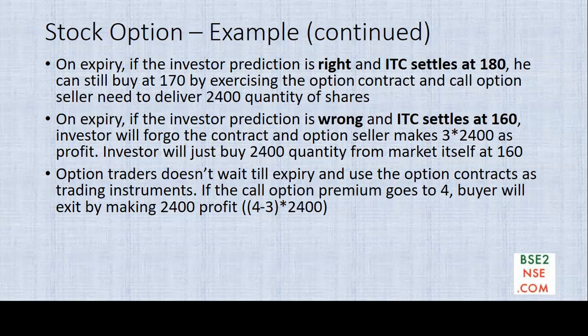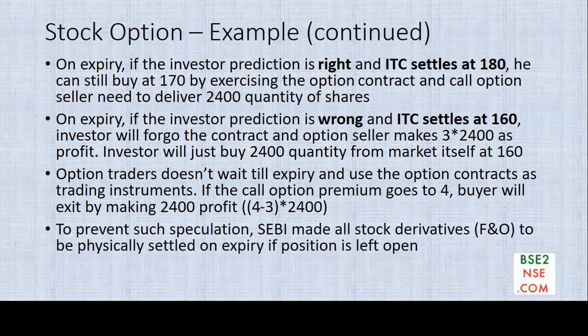Option traders currently don't wait till expiry to exercise the contract. These option contracts are used as trading instruments. For example, if a call option buyer buys the option at 3 rupees and it goes to 4 rupees in 2–3 days, he will simply book the profit. Nobody currently is exercising these contracts to take delivery of stocks — it is made purely for speculation. SEBI wants to control this, so what SEBI has done is made the entire stock derivatives — stock futures and stock options — compulsorily physically settled. This means if you are holding an option contract that expires in the money, you cannot settle in cash; you have to take delivery of the goods if you are a call option buyer.